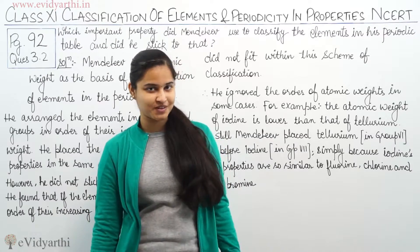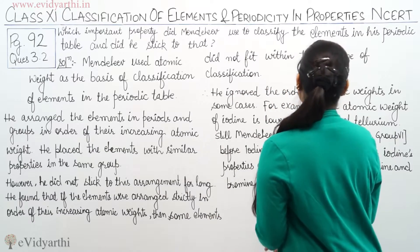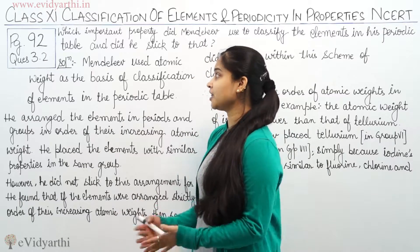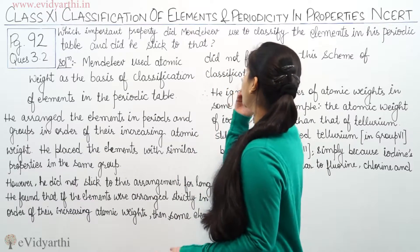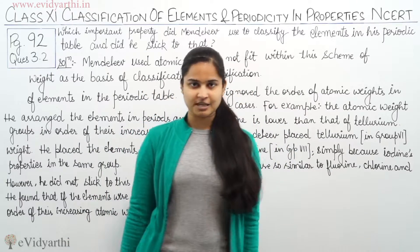So let's see what the question is. The question is, which important property did Mendeleev use to classify the elements in his periodic table and let us stick to that. So we need to tell the important property which Mendeleev used to classify the elements in his periodic table.